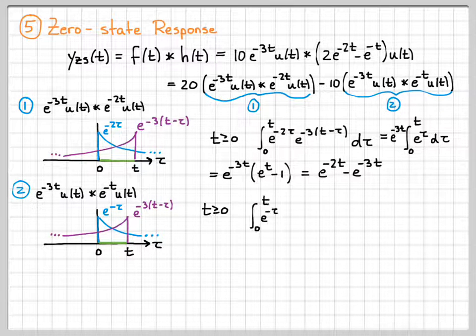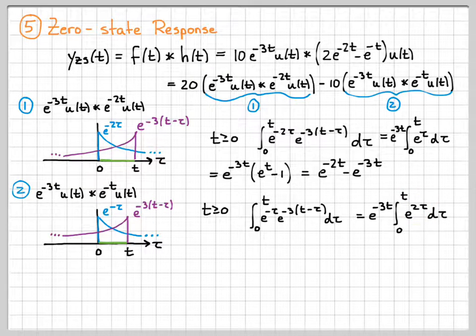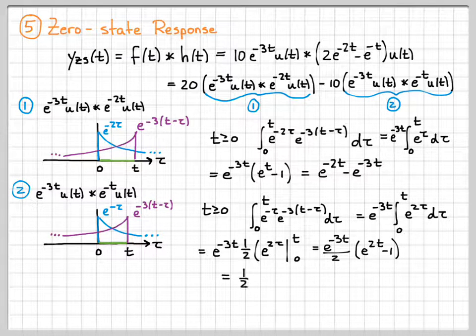So I'm going to integrate from zero to t, the first signal times the second signal. This looks almost the same. The only difference is I have an e to the 2 tau here now. So I end up with dividing by one half to account for that. And then evaluating e to the 2 tau at t and zero gives me this, which I can multiply out and simplify like this. So this is term two.